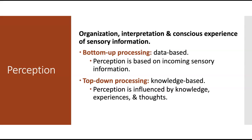Top-down processing explains what happens when you're on the phone with someone and part of the conversation cuts out because they're in a bad area. If only a few words are missed, you can normally still make meaning out of what they're saying. That's because of top-down processing — your brain thinks, 'I have a good idea of what should go here,' and it fills in that information for you.